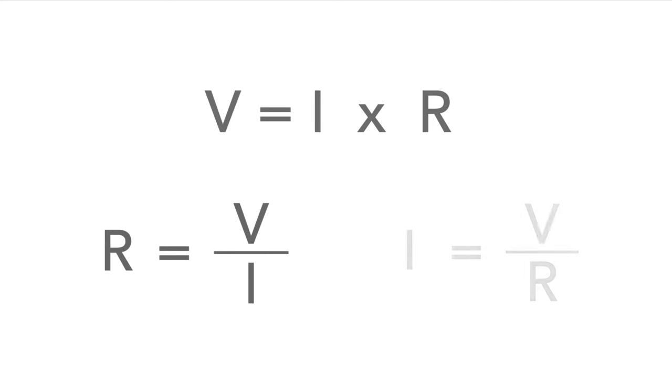Using this equation, if we have any two values we can discover the third. So not only can we say that V equals IR, but also by manipulating the equation we can see that R equals V upon I. And also I equals V upon R.